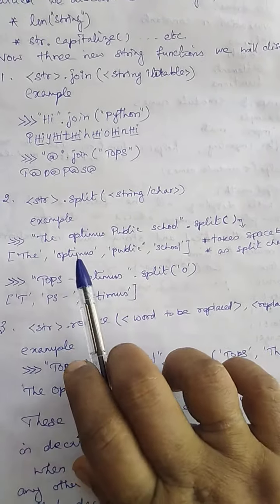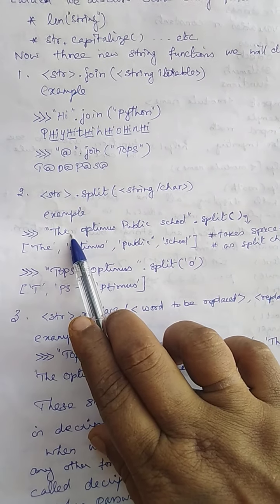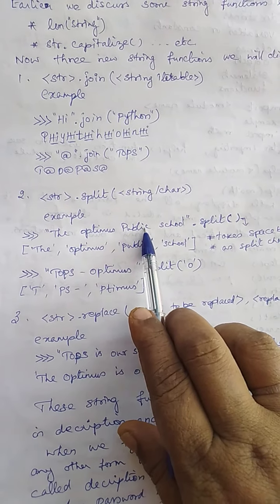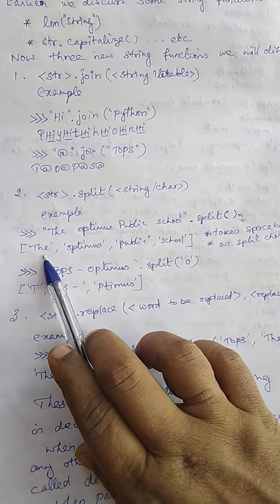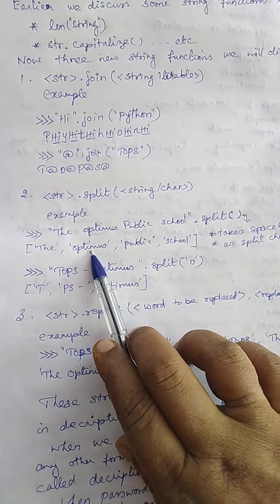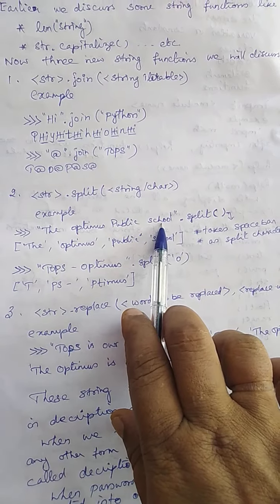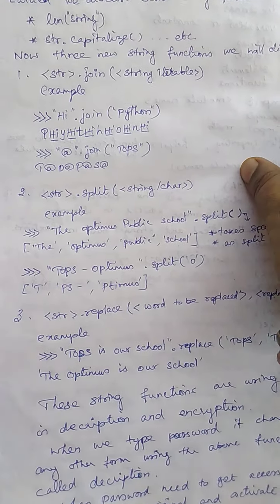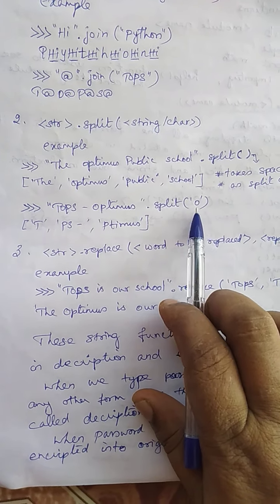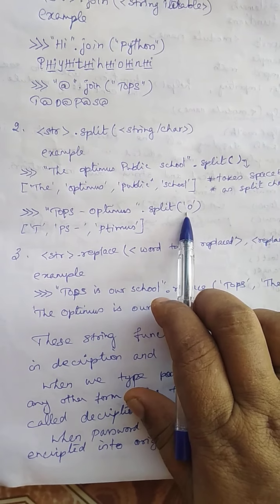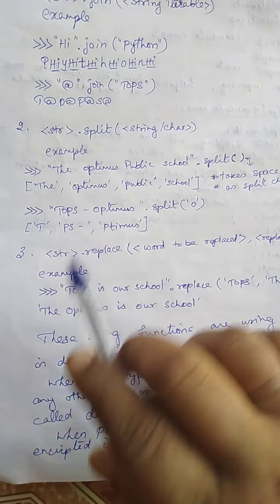See how it is splitting: 'optimus public school' is one string. It is going to be split at each space bar — here 'optimus', here 'public', here 'school'. Each becomes a single string. 'Optimus' becomes one string, 'public' becomes another string, 'school' becomes another string. So it splits 'optimus public school' into four words — four strings. We can give any character or symbol as the split separator, and that character will not be included in the resulting parts.